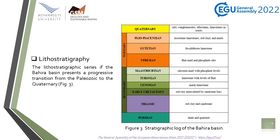The lithostratigraphic series of the Bahia Basin presents a progressive transition from the Paleozoic to the Quaternary. It particularly includes the Maastrichtian to Eocene phosphatic series, which outcrops in the northern border of this basin where it is currently exploited in open-pit mines.